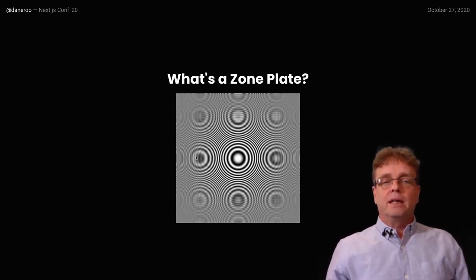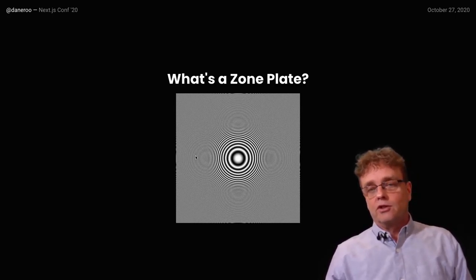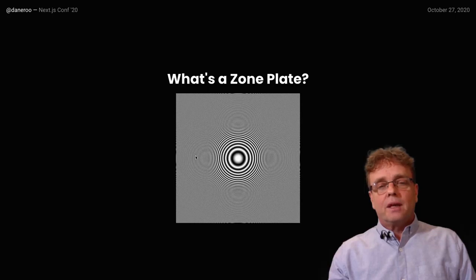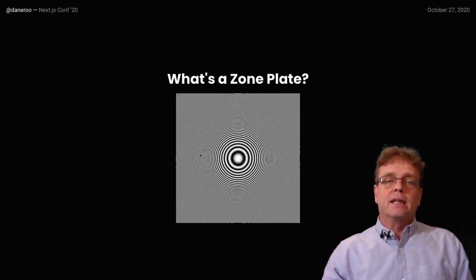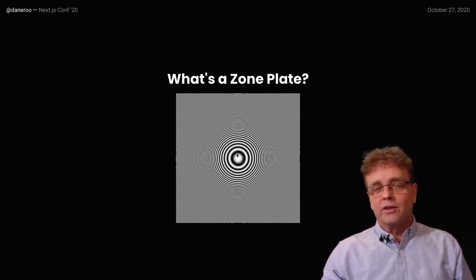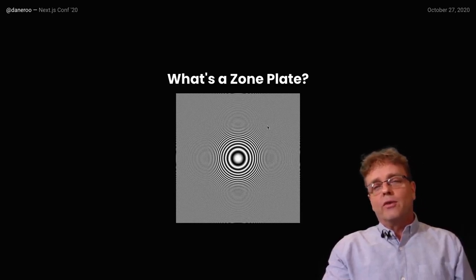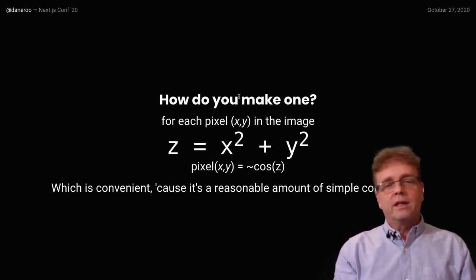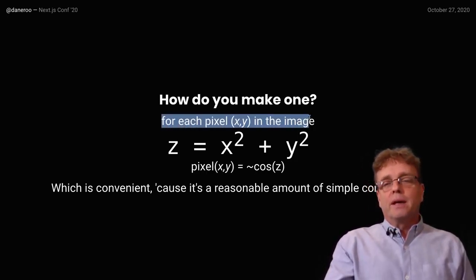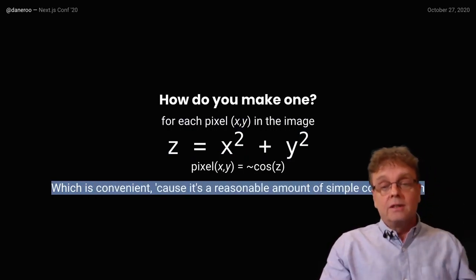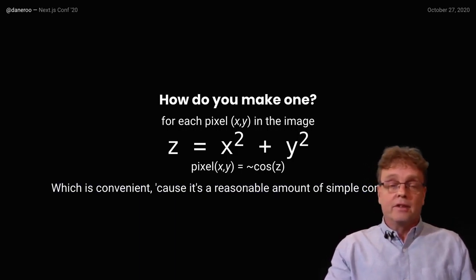What is a zone plate? A zone plate is a visual pattern often used to test video systems. The idea is that it's a frequency map — sometimes called a chirp — that includes all levels of detail in all directions. It's very nice for testing how a video system responds to varying levels of detail. In the middle you have a very smooth low-frequency image, and at the edges you have super high-frequency, rapidly varying patterns. To make one, for every pixel there's a simple function to compute involving a squaring operation — a reasonable amount of computation I thought might benefit from WebAssembly.